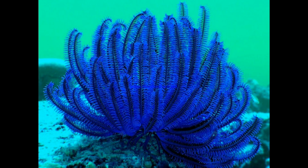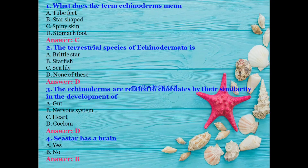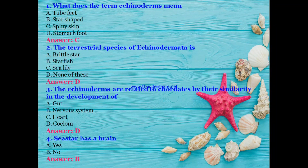Now let's move to MCQ questions. First question: what does the term 'echinoderm' mean? Tube feet, star-shaped, spiny skin, or stomach foot? The answer is C — spiny skin. Second: the terrestrial species of Echinodermata is Brisselster, starfish, sea lily, or none of these? The answer is D — none of these, because Echinodermata are exclusively marine animals.